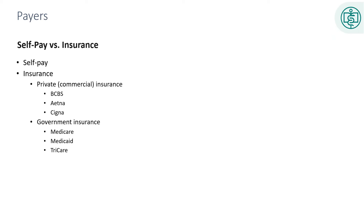Although rare, some patients pay in full for their own medical expenses. The majority of patients will have some type of insurance coverage. There are two types of insurance coverage: private or commercial insurance and governmental insurance. Commercial or private carriers can have both group and individual plans. Group plans are often offered through employers, while individual plans are purchased directly from the insurance carrier.